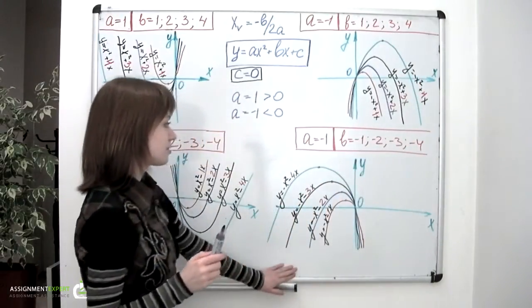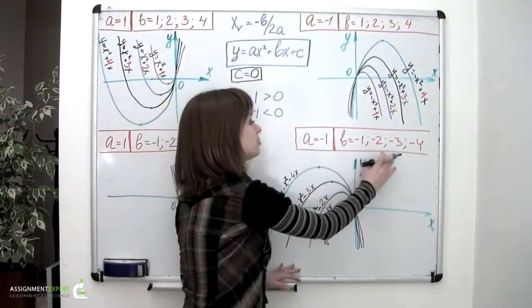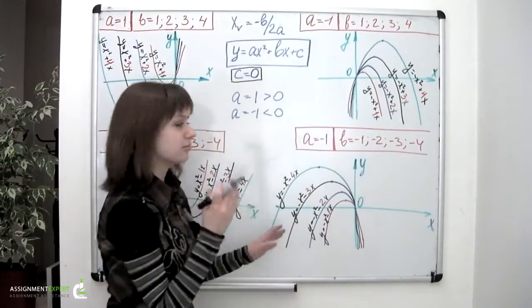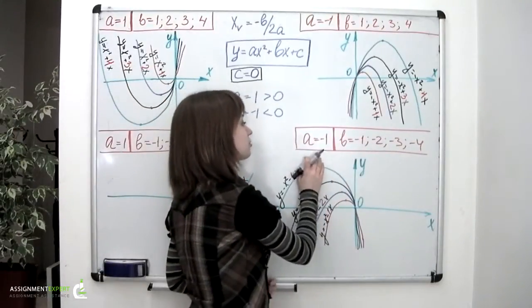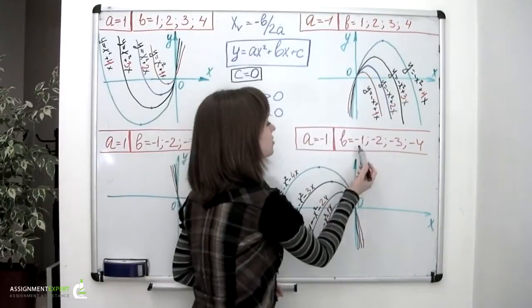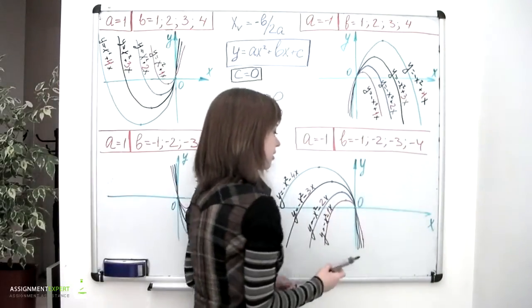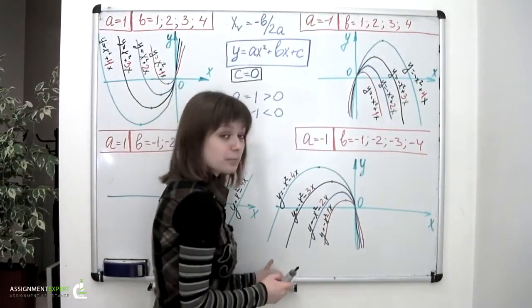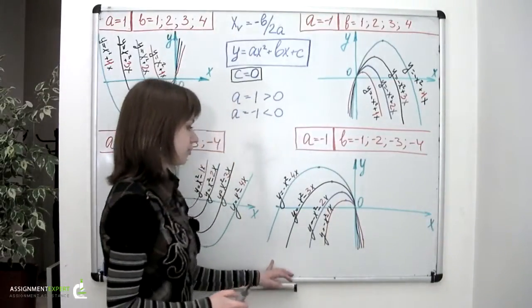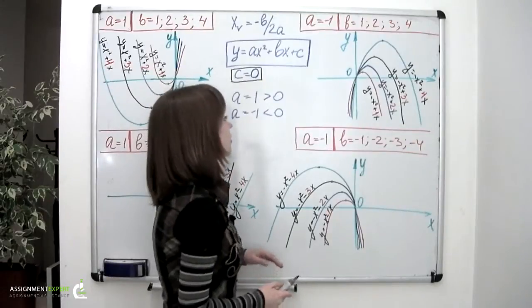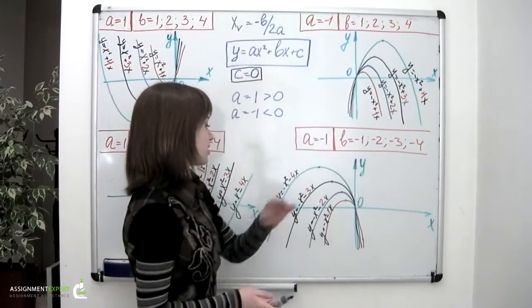And the last case. Here we have a and b both set to negative values. a is equal to negative 1 and b is set to the values negative 1, negative 2, negative 3 and negative 4. Again, 4 parabolas directed downwards, just as we had in the previous case.